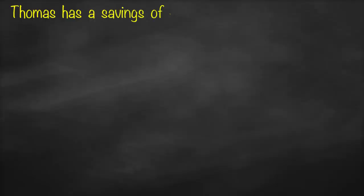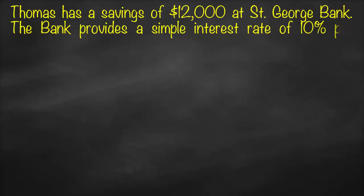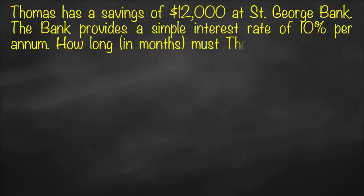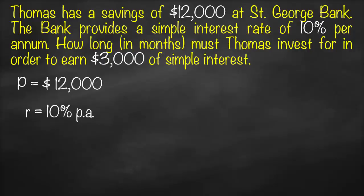Thomas has savings of $12,000 at St. George Bank. The bank provides a simple interest rate of 10% per annum. How long in months must Thomas invest in order to earn $3,000 of simple interest? The variables are: principal = $12,000, simple interest rate = 10% per annum, interest amount = $3,000, and we need to calculate time.